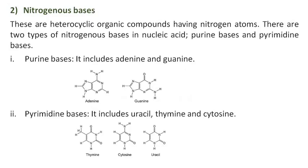Nitrogenous bases are heterocyclic organic compounds having nitrogen atoms. There are two types of nitrogenous bases in nucleic acid: purine bases and pyrimidine bases. Purine bases include adenine and guanine, and pyrimidine bases include uracil, thymine, and cytosine.